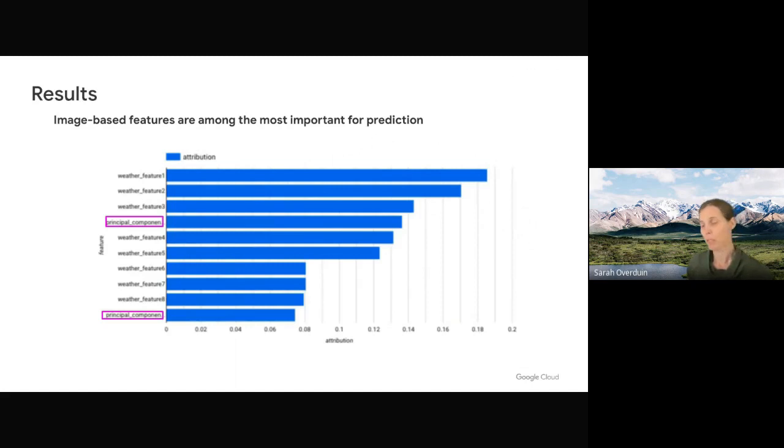So in terms of the results, it turns out that our image features seem to be fairly important. So we have several different weather features in our model. I think we have around close to 60 features in this model, which includes both image and weather features. And we have, actually, in the top 10, we have two of the image-based features, which is interesting. So we're excited about that, and we're excited to see how this will help us improve our in-orchard weather prediction.